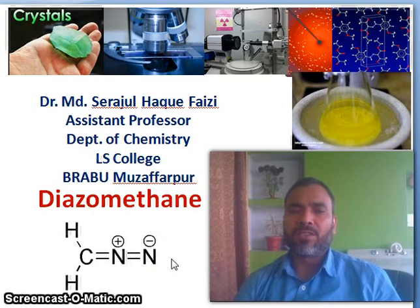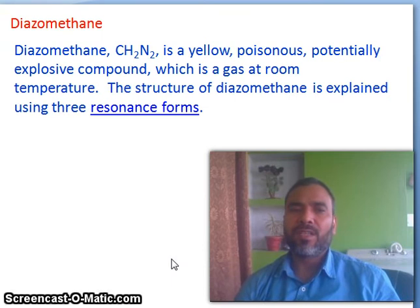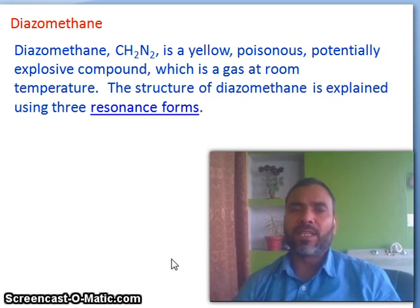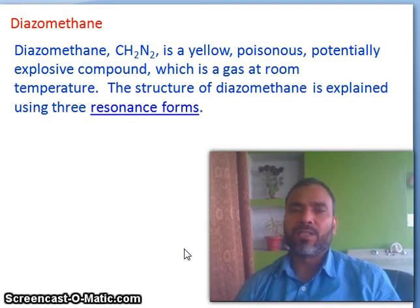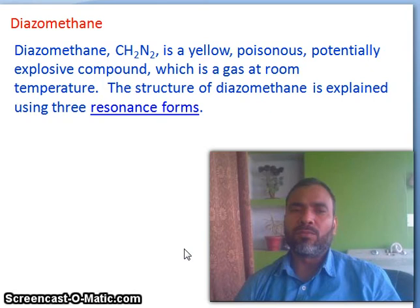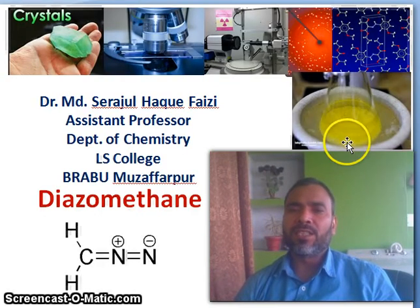Today we will discuss the applications of Diazomethane. Diazomethane, CH2N2, is a yellow, poisonous, potentially explosive compound which is a gas at room temperature. The structure of Diazomethane is explained using three resonating forms. The compound is a yellow-colored substance.